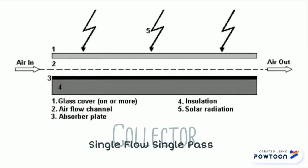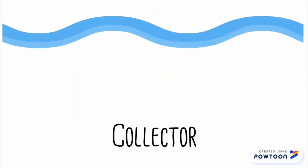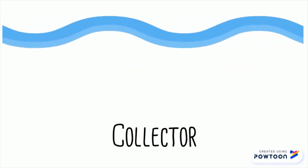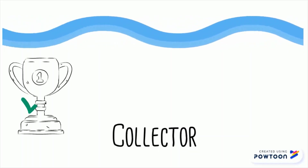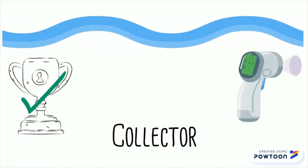The solar radiation passes through the transparent cover and is absorbed by the absorber plate. It is then transferred from the heated absorber plate through the air flowing through the channel. Air flow channel configuration is an important parameter that affects the efficiency and outlet temperature of the solar air heater.